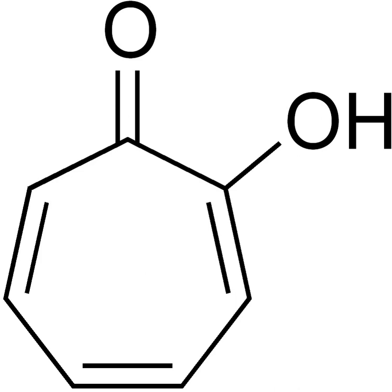Tropolone is an organic compound with the formula C7H6O2. It is a pale yellow solid that is soluble in organic solvents. The compound has been of interest to research chemists because of its unusual electronic structure and its role as a ligand precursor. Although not usually prepared from tropone, it can be viewed as its derivative with a hydroxyl group in the two position.